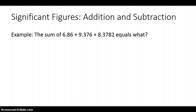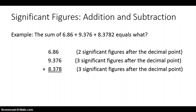Let's look at an example. We want to find the sum of the following three numbers: 6.86, 9.376, and 8.3782. We want to know what the final answer should be to convey the correct amount of significant figures. The first thing we do is determine the number of significant figures after the decimal point for each value. For our first number, we have two digits after the decimal point.